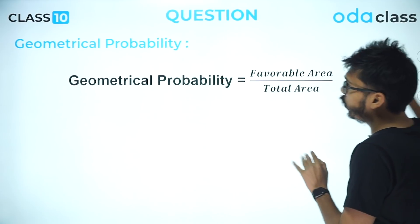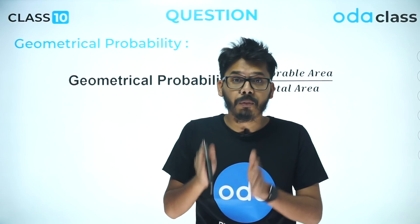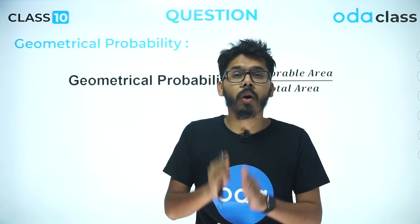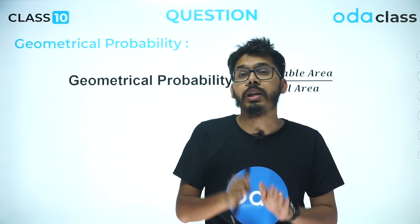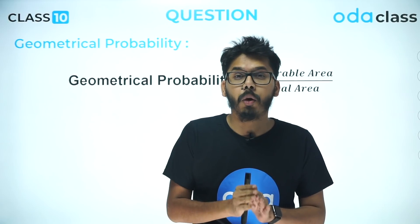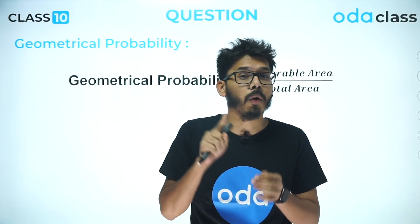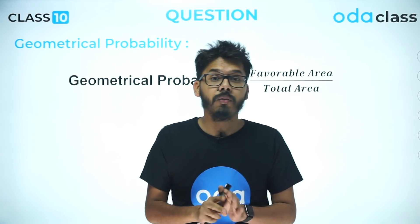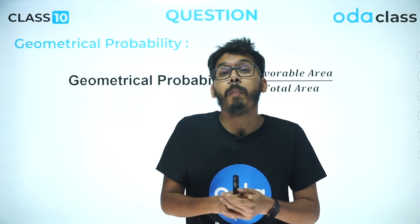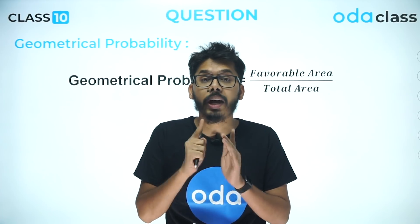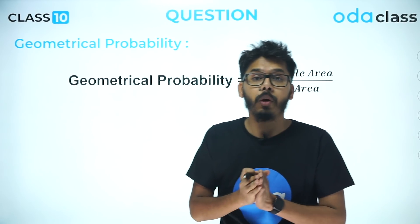The next point is a very interesting topic: geometrical probability. Before 2015, most people were overlooking geometrical probability because they had never asked any question on it, and most questions from the probability chapter used to come for one mark or two marks. But in 2015, there was a question for three marks, maybe four marks, which was based on geometrical probability. So guys, don't forget to revise this particular subtopic. When you talk about geometrical probability, you get favorable area divided by total area as your probability.